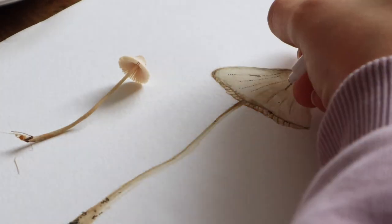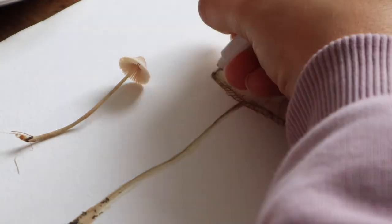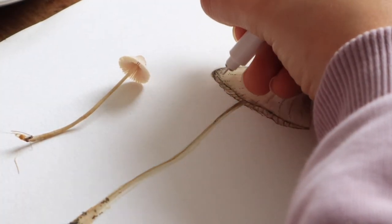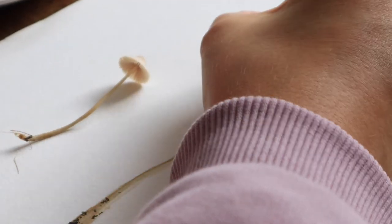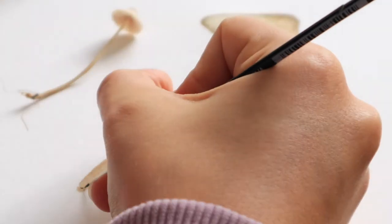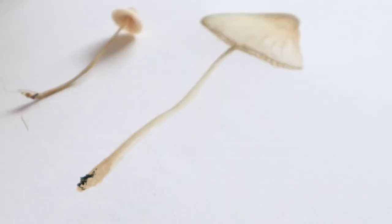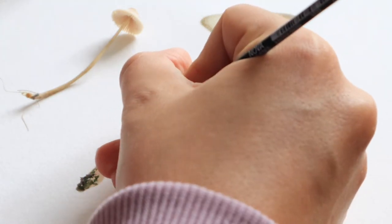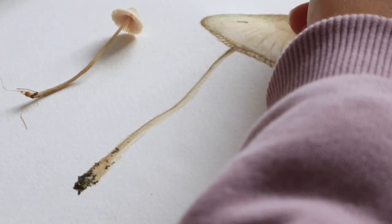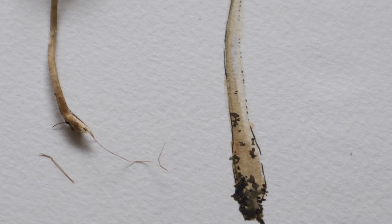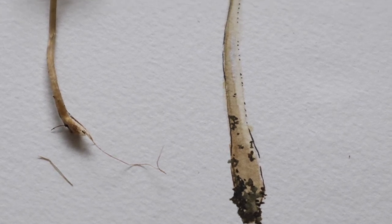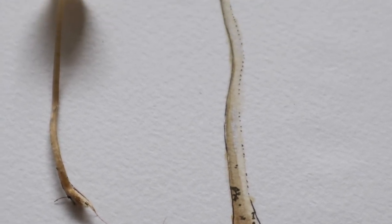Lastly I like to add some details with fineliner to create some more depth in the contour, the lines on top of the cap and the shadows by adding dots in different sizes. As an extra detail I like to add a more earthy effect by creating dots with dark brown at the bottom of the mushroom and some speckles on top of the mushroom. And that's it. This is the end result of the painting. I love how cute it turned out.